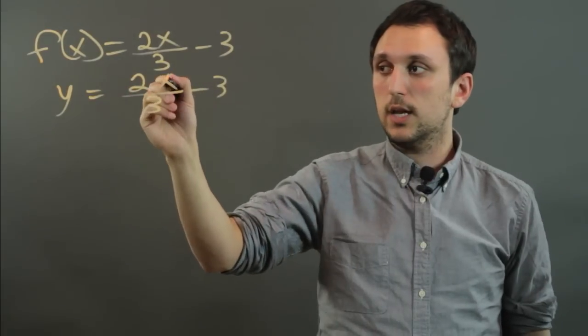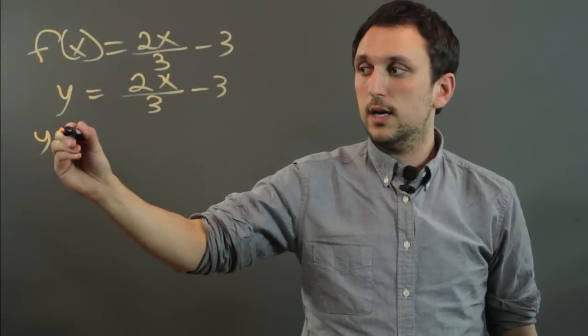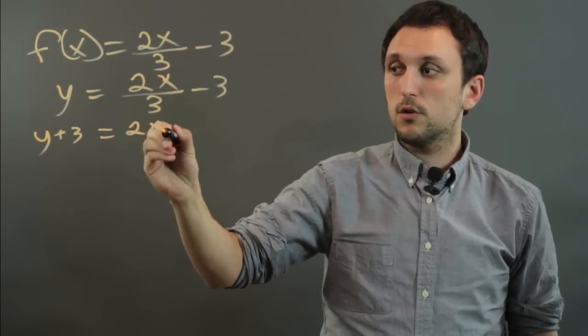And the next step is to isolate x. So we're going to add 3 to each side. So we have y plus 3 equals 2x over 3.